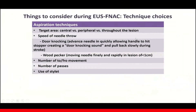The basic things to consider when doing EUS FNA are: number one, aspiration techniques, such as how to select the target area — central versus peripheral versus throughout the lesion — speed of needle throw. There are some techniques that have been described, like door knocking and woodpecker, which I will touch on later, number of to-and-fro movements, number of passes, and the use of stylet.